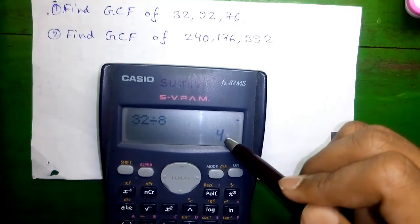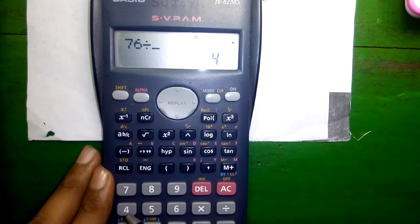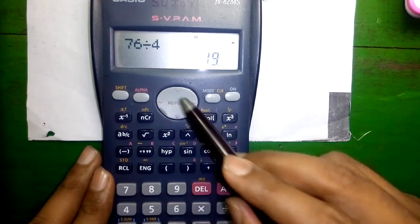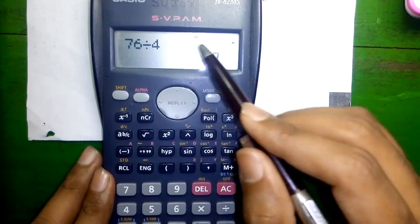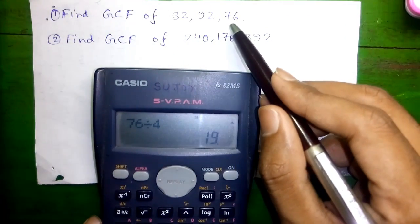Now we will divide 76 by the common GCF 4. So since 76 is wholly divisible by 4, 4 is the common GCF of 32, 92 and 76.